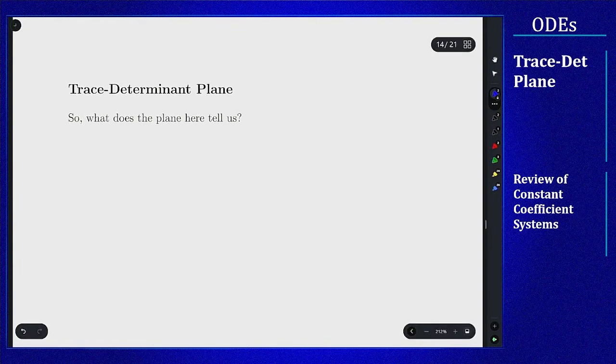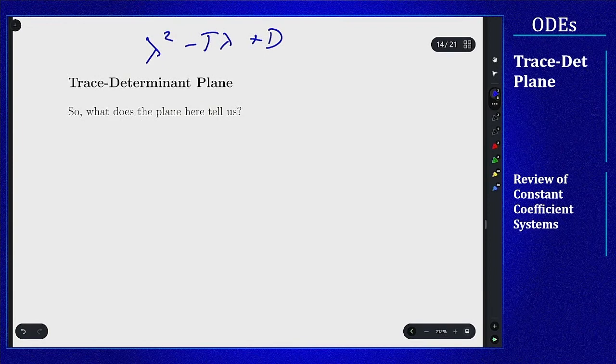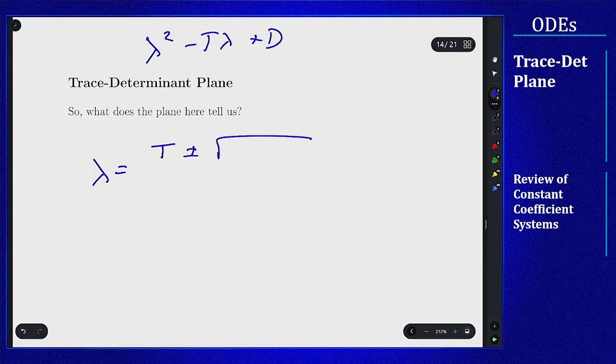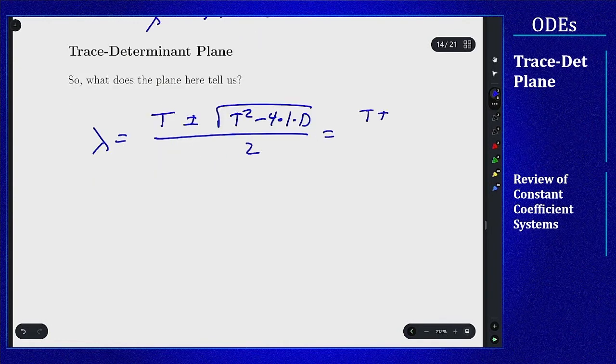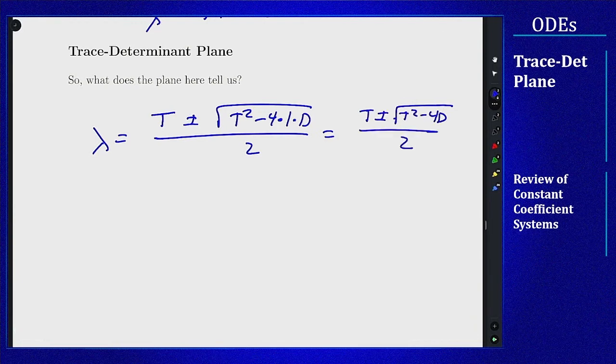So what does this tell us? Well we know that our polynomial for the eigenvalues is lambda squared minus T lambda plus D. So let's find the eigenvalues. From the quadratic formula I will get that lambda should be T plus or minus the square root of T squared minus 4 times 1 times D all over 2. So it's T plus or minus square root of T squared minus 4D all over 2. And again you can see if I add them together I will get T, you work out if you do the product I get D, it all works out nicely. So what's the key here? Well all of the different properties of the solution is based on what these eigenvalues are.